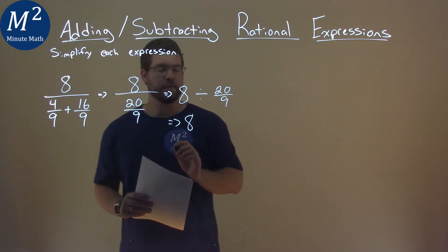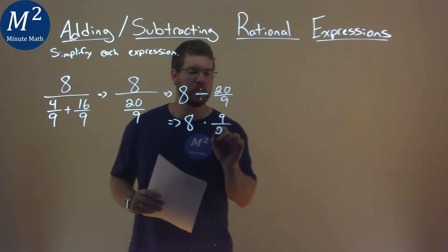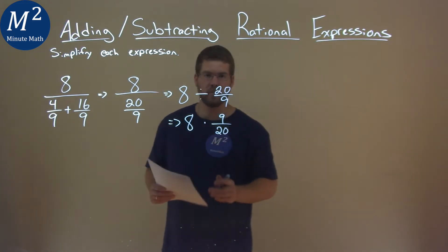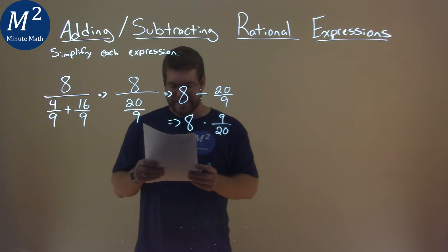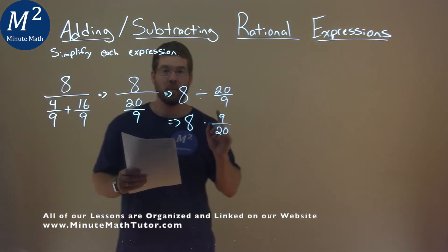Then I turn it into multiplication. Instead of dividing 20 over 9, I multiply 9 over 20. Remember, we can flip the fraction and make it multiplication. This makes it a little easier to see. Now let's go simplify where we can.